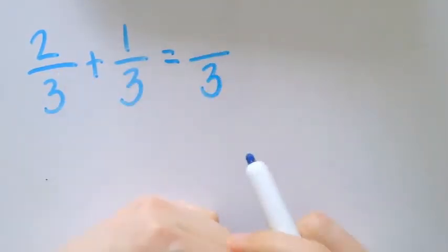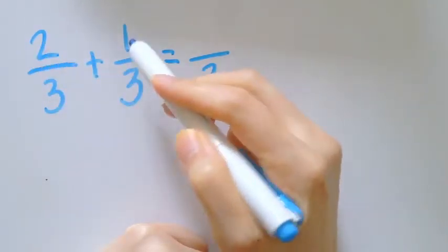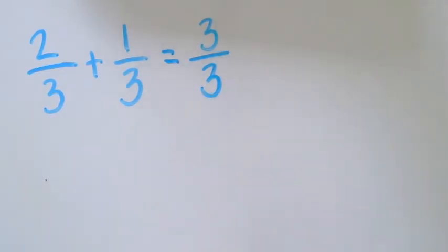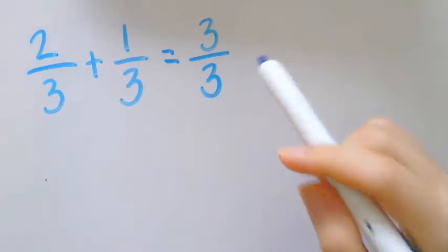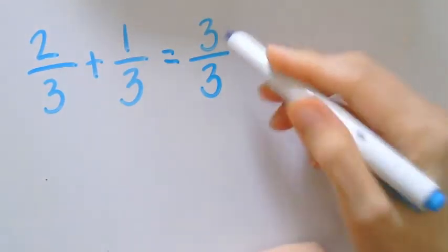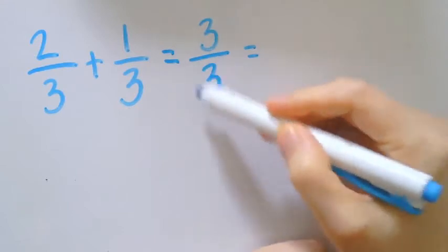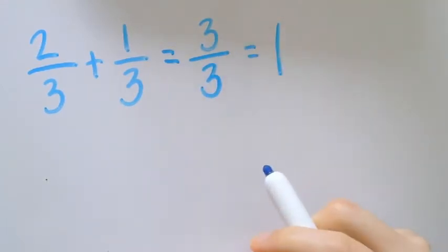And what do we do up top? Two plus one, which is three. Some of you are already looking at this and saying it's already equivalent to one. We already know that anytime your numerator is the same number as our denominator, that gets you to one.